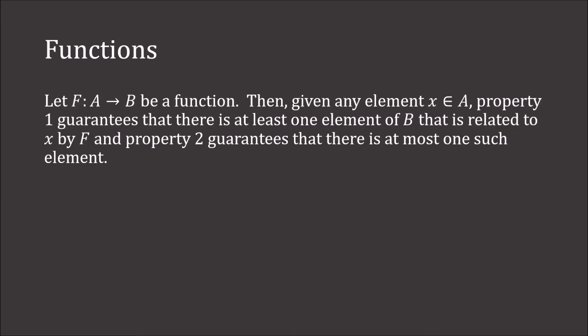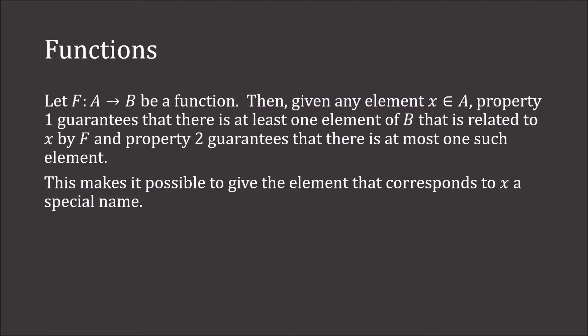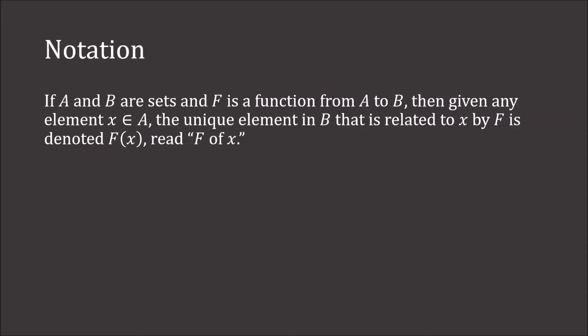If we let f from A to B be a function, then for any element x in A, property one guarantees there is at least one element of B related to x by F, and property two guarantees that element is unique. This makes it possible to give that element a special name: the unique element in B related to x by F is denoted f of x.